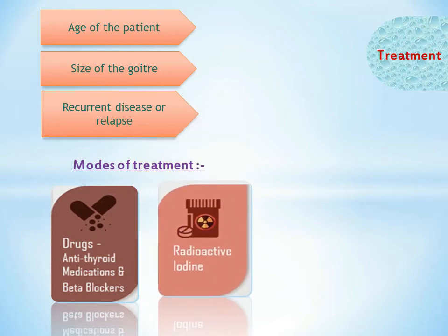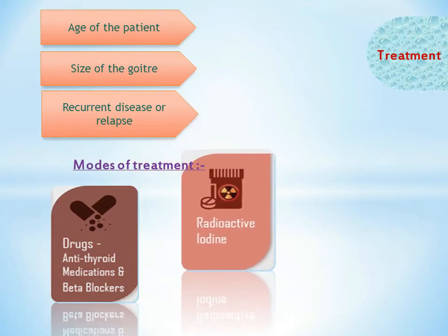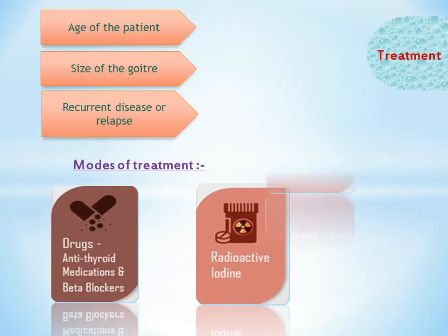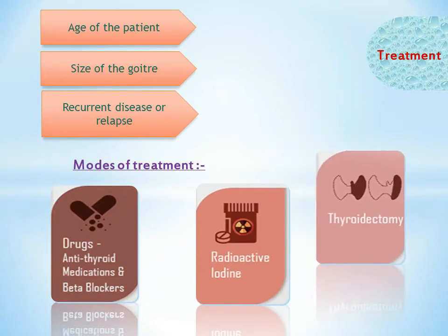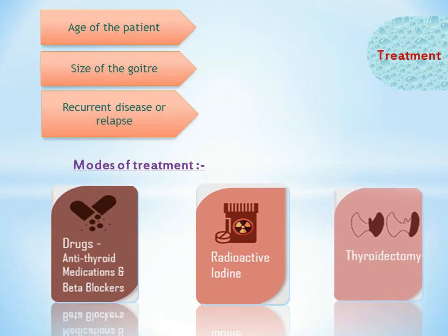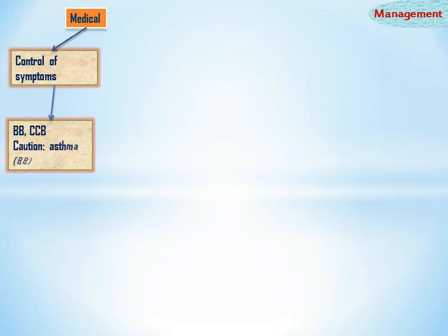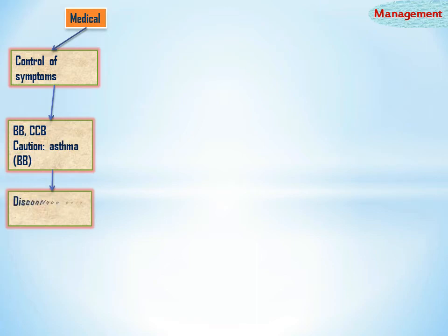The next mode of treatment is radioactive ablation or destruction of the thyroid by radioactive material. And finally, surgery — subtotal thyroidectomy. For medical management and control of symptoms, beta blockers or calcium channel blockers are given, with caution in asthmatic patients. Once the patient becomes euthyroid, these drugs are to be discontinued.